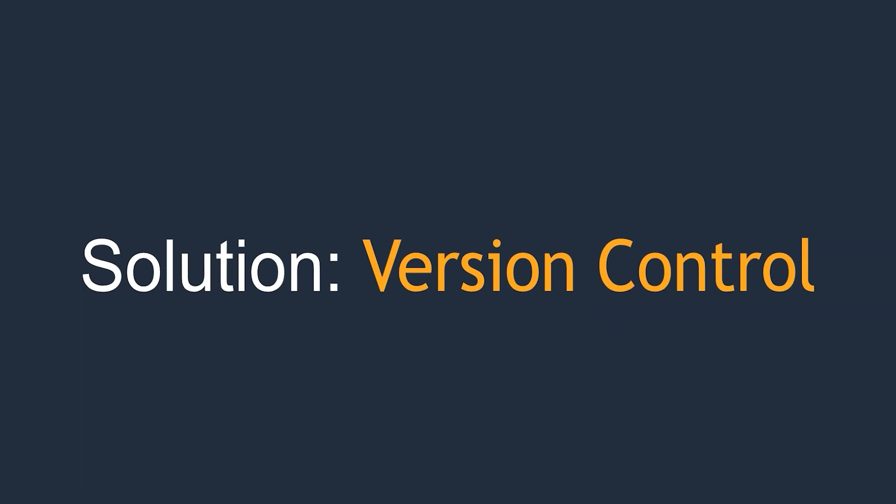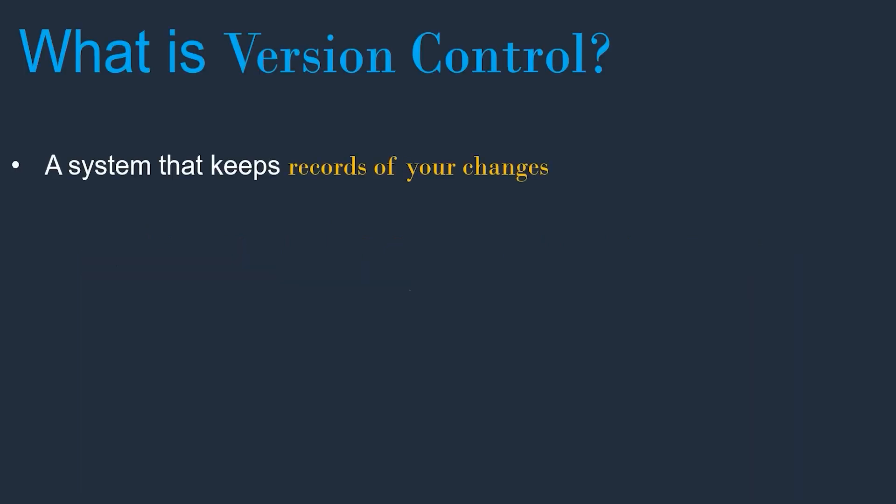A version control system is a system that keeps a record of your changes while you are writing code. If you do any changes to your code, it tracks and records those changes. For example, if I've written code yesterday and done changes today, and after one week I want to see what changes I made on a specific day, that's quite difficult. But if those changes are causing issues and I want to revert them, the version control system works effectively — it remembers each and every change.